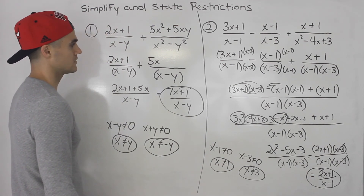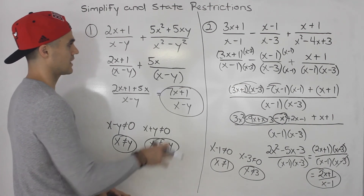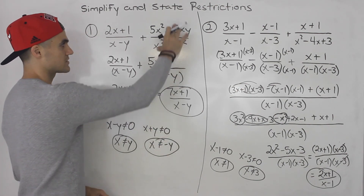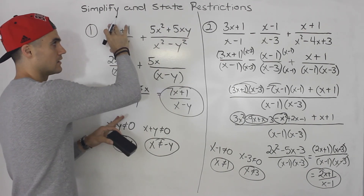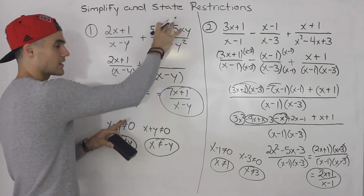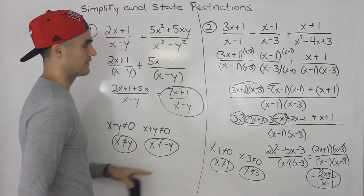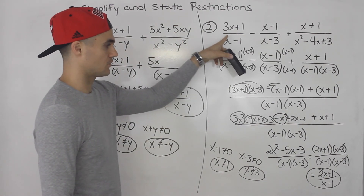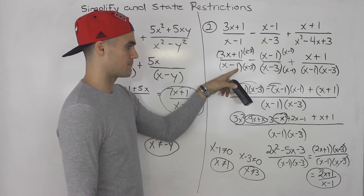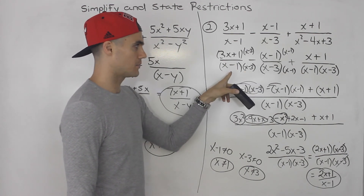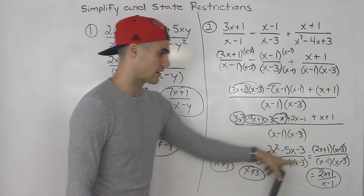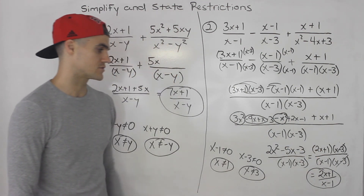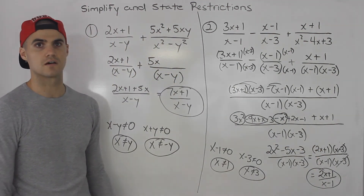So those are two different cases to be aware of. In the first example, we simplified a rational expression before adding by canceling early. In the second example, after finding the LCD and simplifying, we factored the resulting numerator and canceled to simplify further. Always be on the lookout for these situations — they're common in these types of questions.